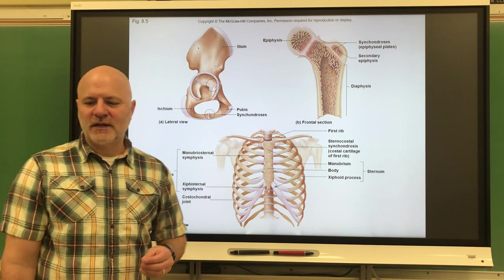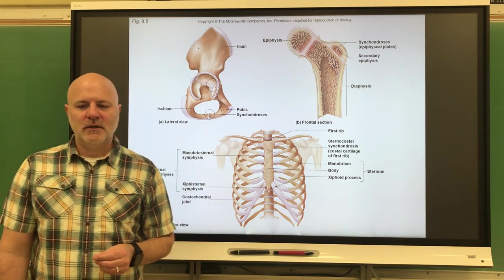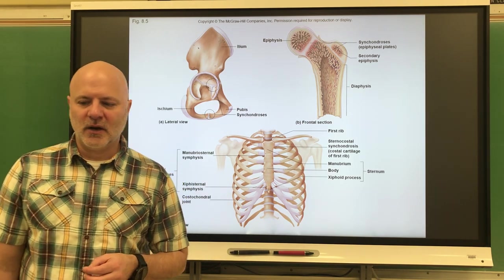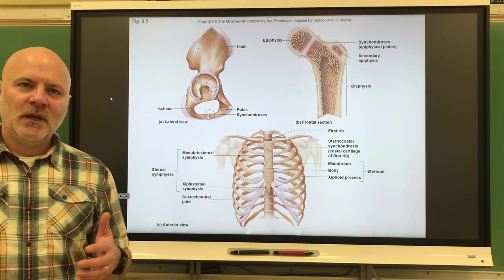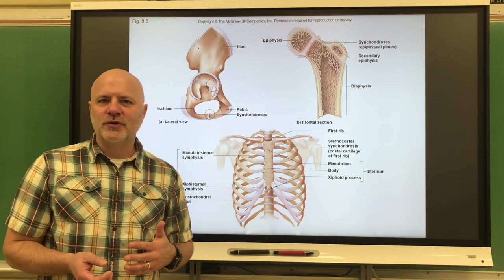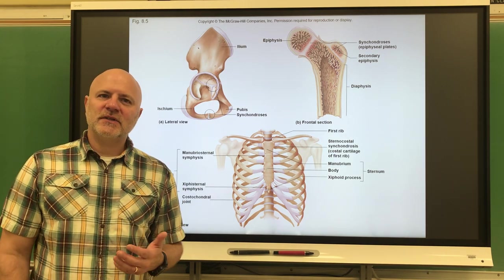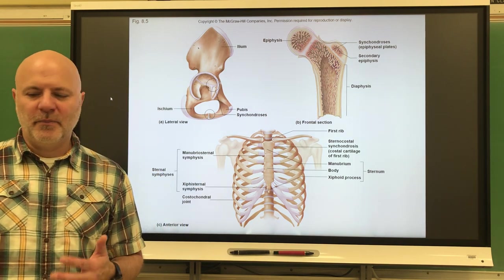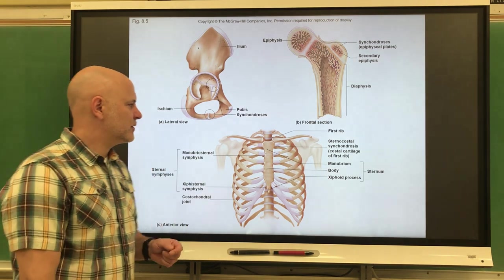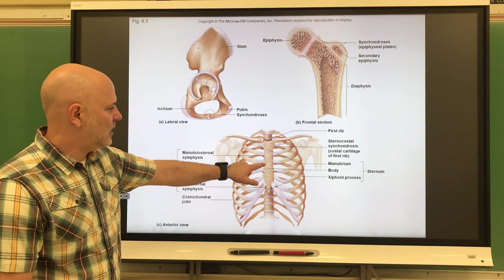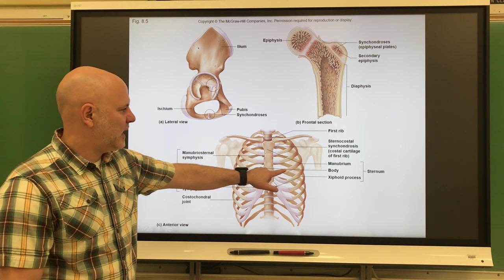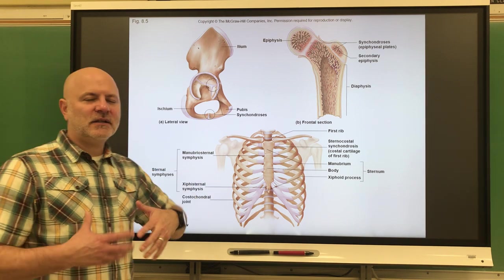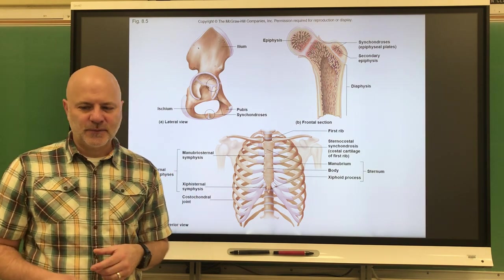The next type are cartilaginous joints. A cartilaginous joint is a type of joint in which two or more bones are joined by cartilage, producing a slightly movable joint. The first type is a synchondrosis, a joint in which the bones are united by hyaline cartilage. We see this between the sternum and the ribs — the costal cartilage — which allows for movement of the rib cage.